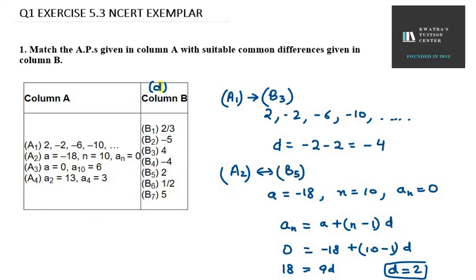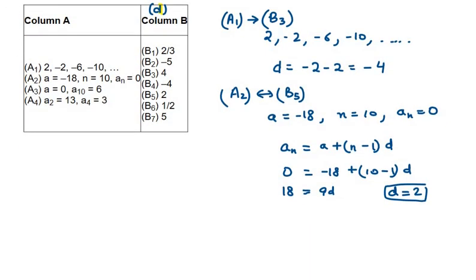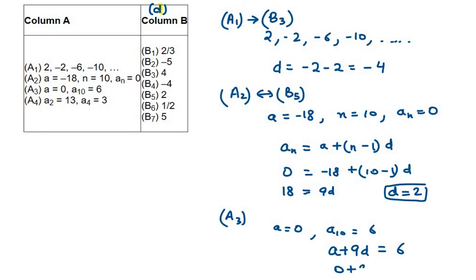Now for A3, we are given a = 0 and a10 = 6. Using the nth term formula, a10 = a + 9d = 6. Since a = 0, we get 9d = 6, so d = 6/9, which is equivalent to 2/3. That means A3 matches with B1.